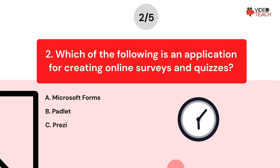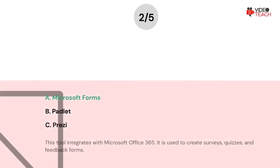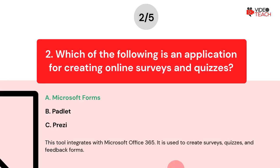Now you have about 15 seconds to think about your answer. The correct answer is Option A. This tool integrates with Microsoft Office 365 and is used to create surveys, quizzes, and feedback forms.